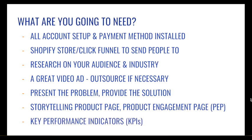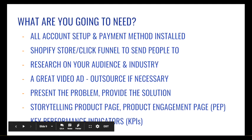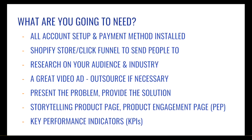The last thing you need to know is your key performance indicators. You need to know how much you can spend to acquire a customer per product or on average. If you went through the supplier section of the course, you should know MAP pricing and that you need margins of at least 15-20% on your products to have wiggle room in your ad budget. Document everything — Facebook and Google Analytics help a lot. That's it for lesson 1.1. The content gets a lot more intricate moving forward — see you in the next lesson.